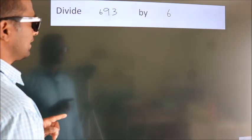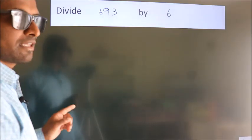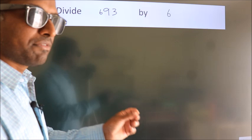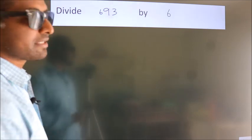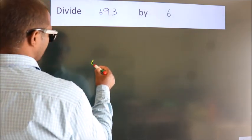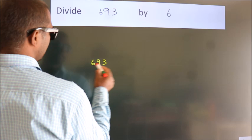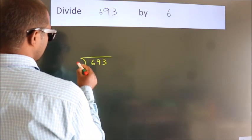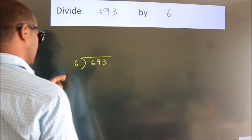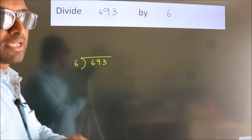Divide 693 by 6. To do this division, we should frame it in this way. 693 here, 6 here. This is your step 1.